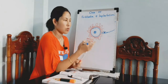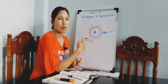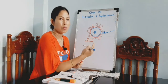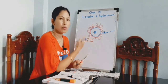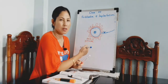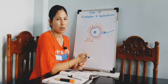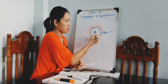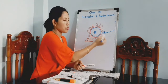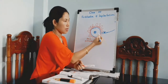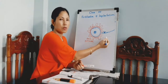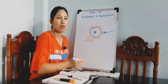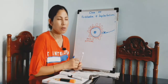The egg or the zona pellucida does not allow more than one sperm to fertilize the egg. This is what fertilization is. As a result, the fusion of two haploid cells — that is the haploid egg and haploid sperm — results in the formation of the diploid zygote.